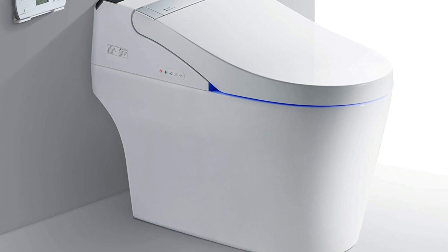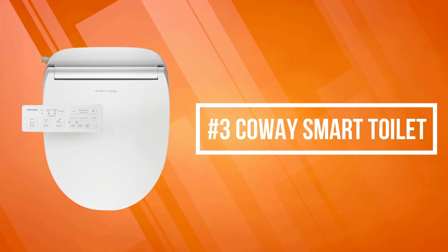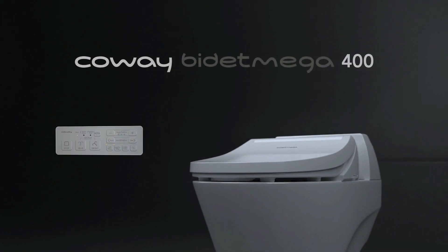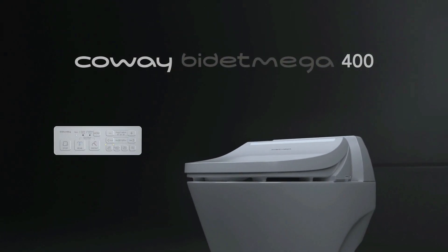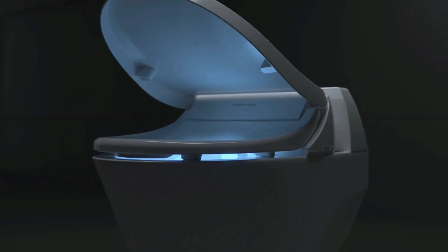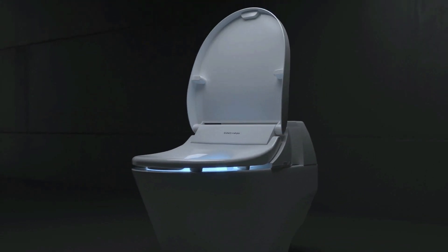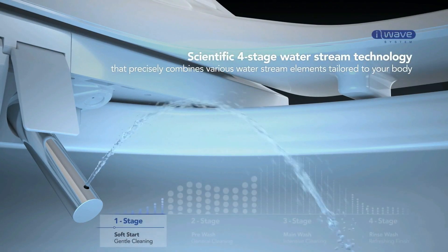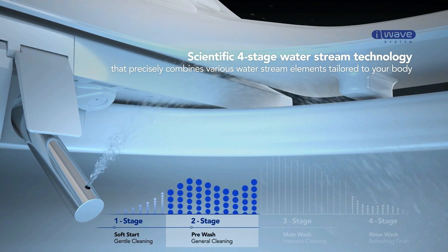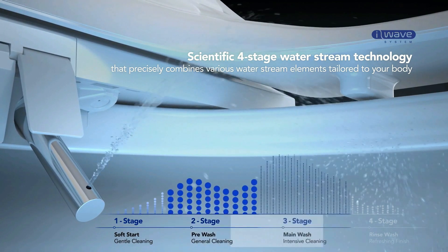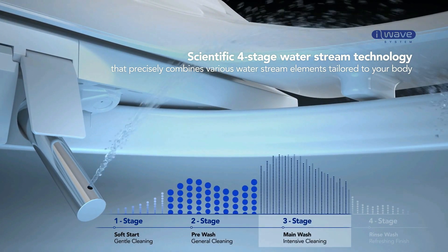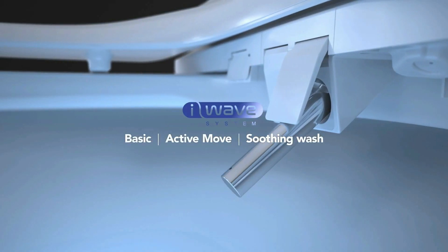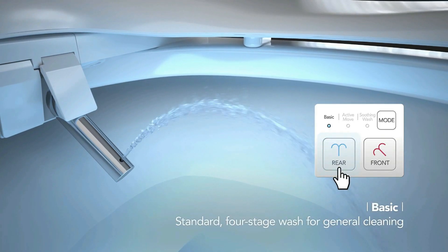At number three on our list is the Kuwait Smart Toilet. Kuwait smart toilet is specifically designed with multiple modes to work for everybody: soothing wash mode, rear mode, front mode, active move mode, child wash mode. Proprietary technology uses a thorough four-stage wash and rinse process, providing the perfect combination of water pressure and air. Kuwait Bidet Mega 400's sleek design, smart engineering, and hygienic construction make it ideal for modern bathrooms.